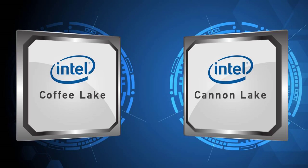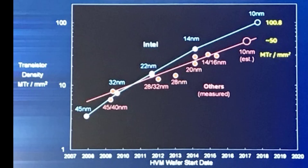The successor of Canon Lake micro-architecture will be Ice Lake in 2019, which will represent the architecture phase in the Intel process-architecture-optimization model. Here are the key things to know about the 10nm chip in semiconductor fabrication: the International Technology Roadmap for Semiconductors, or ITRS, defines the 10 nanometer node as the technology node following the 14nm node.